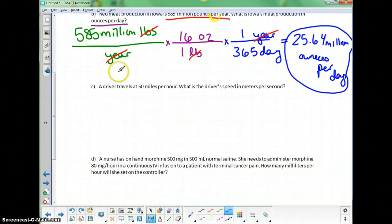A driver travels at 50 miles per hour. Another per problem. So we're going to say 50 miles per hour. What is the driver's speed in meters per second? So we're going to convert miles into meters and hours into seconds. Let's work on miles first.